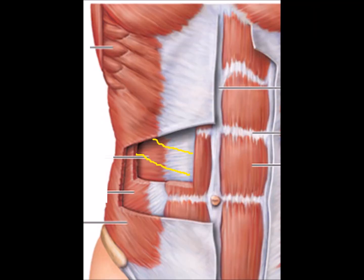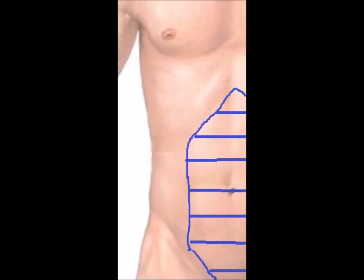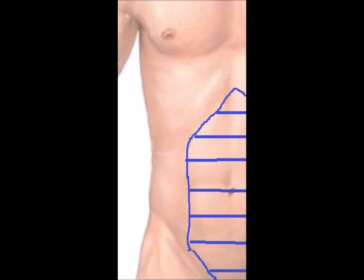The intercostal nerves end as anterior branches deep to the rectus abdominis, then they pierce the rectus abdominis. They supply all abdominal muscles and overlying skin medial to the navel line.